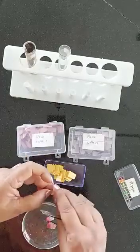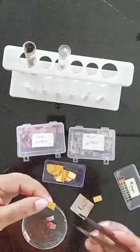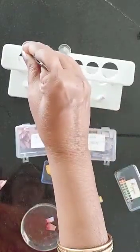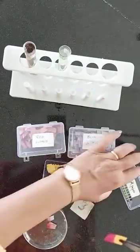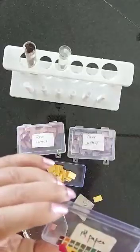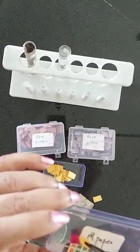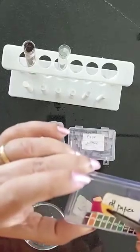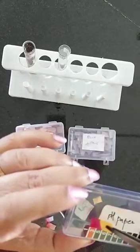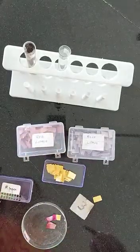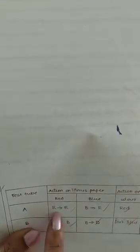Now pH paper has a scale — a pH scale. I take pH paper and dip it in the solution, and I can see the pH paper shows number 1. So we can easily say that this pH number is 1. I now write down what I see in my journal. Solution A: red litmus remained red, blue litmus turned red, the color of pH paper was red, and the pH number is 1. Hence the conclusion is solution A is acidic.